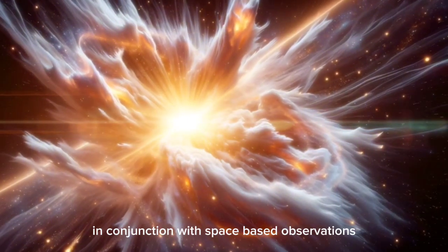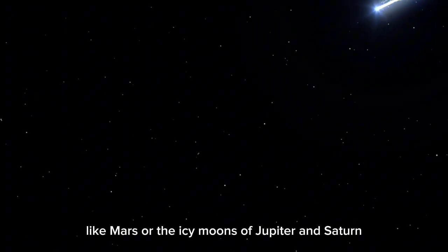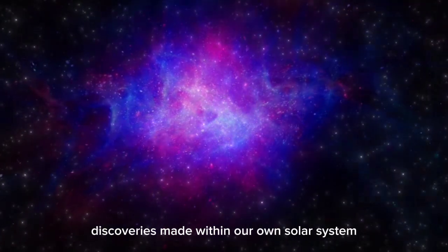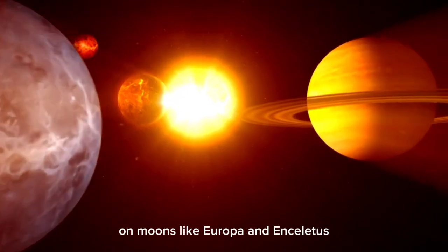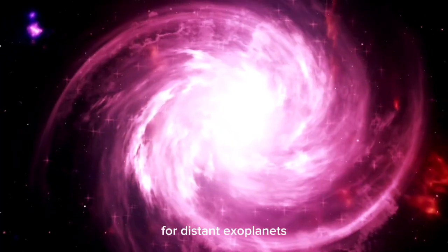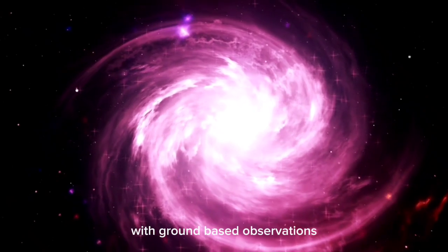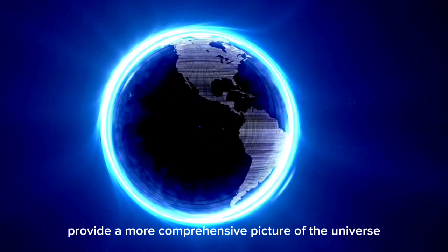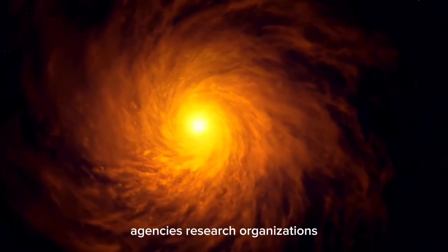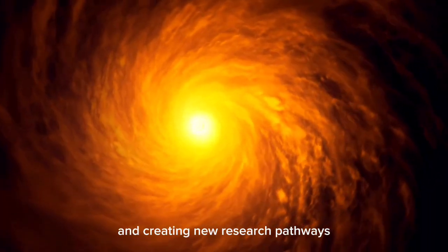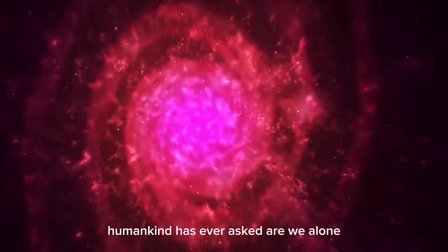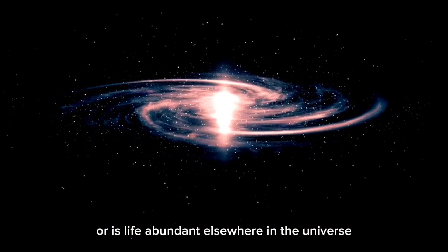Missions to other parts of our solar system, like Mars or the icy moons of Jupiter and Saturn, will also play a crucial role in the search for life. Discoveries made within our own solar system, such as possible biomarkers on rocks or subsurface oceans on moons like Europa and Enceladus, could provide valuable clues about the presence of life beyond Earth. The integration of data from the JWST with ground-based observations and other space missions will provide a more comprehensive picture of the universe. Collaborative efforts between international space agencies will be essential. Are we alone, or is life abundant elsewhere in the universe?